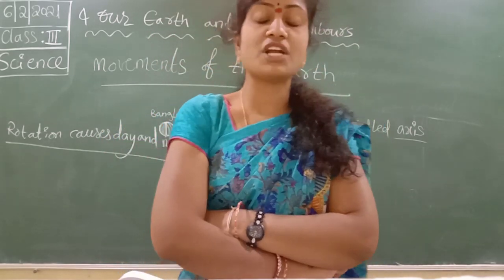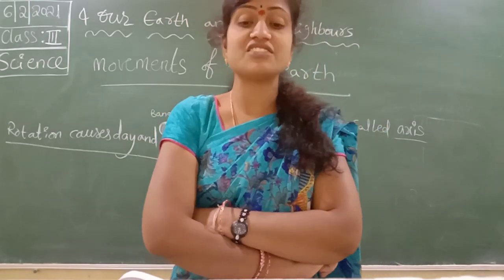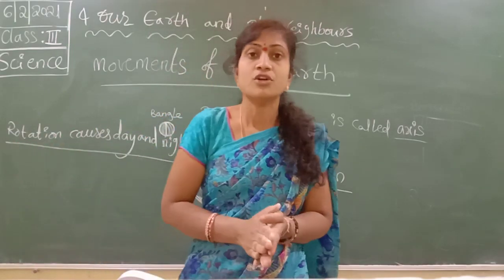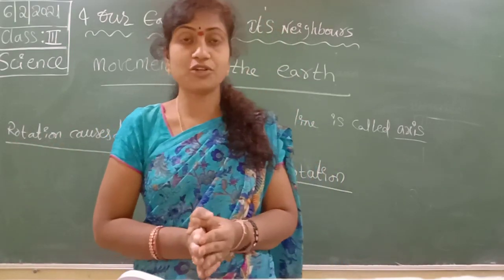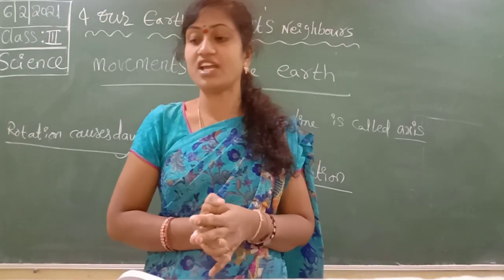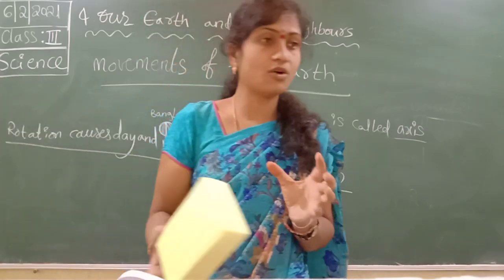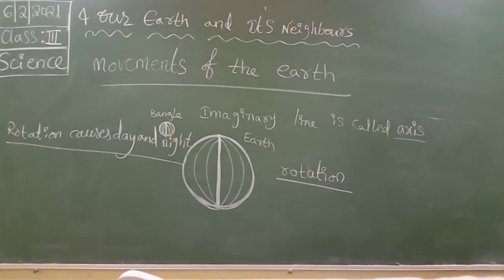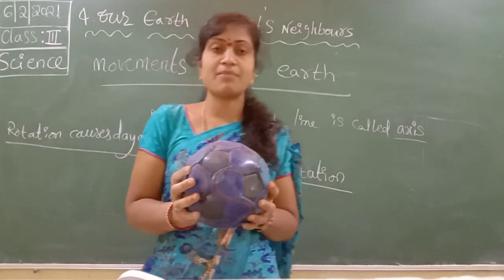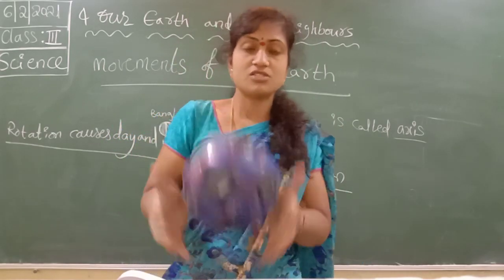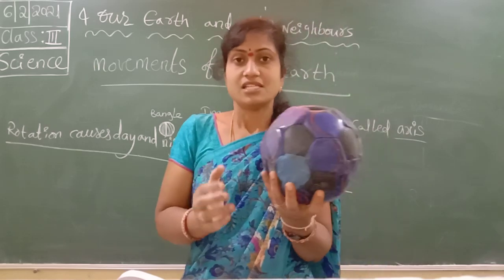What happens when your rubber ball rotates in the light of a torch? Do this activity to see how days and nights are formed. You have to take one rubber ball and a torch. Here I am using a volleyball since a rubber ball is not available.